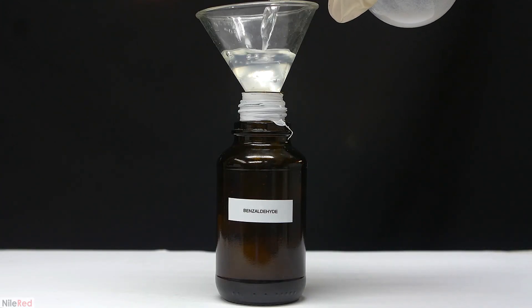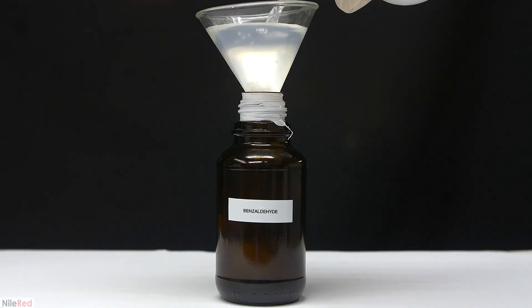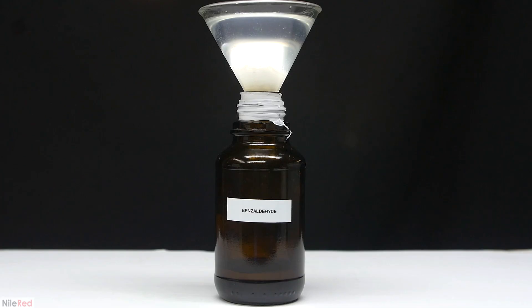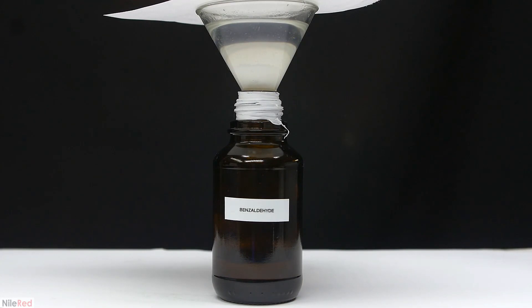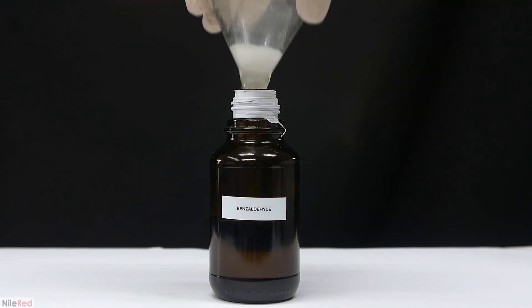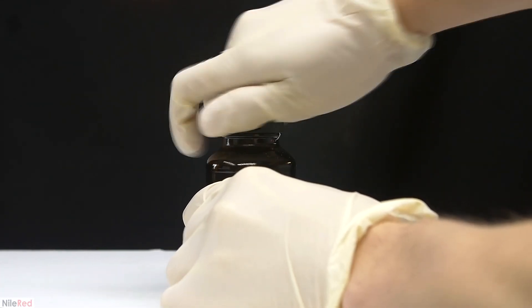Anyway, like before, the magnesium sulfate is separated from the benzaldehyde by just filtering it through some cotton. This time though, instead of filtering it into a round bottom flask, I'm filtering it directly into the bottle that I'm going to be storing it in. It does take a little bit of time to filter through, so to limit its exposure to air, I just put a piece of paper on top of the funnel.